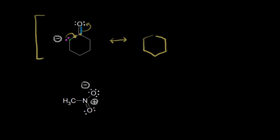Our goal when drawing a resonance structure is to delocalize that negative one formal charge — to spread out electron density. We take the electrons in magenta and move them in to form a double bond between the carbon in green and the adjacent carbon. That would be too many bonds to the carbon in yellow, so the electrons in blue come off onto the top oxygen. We draw our brackets and put in our double-headed resonance arrow to draw the other resonance structure. Now there's a double bond between those two carbons, and the top oxygen has three lone pairs of electrons, having picked up a pair from that pi bond.